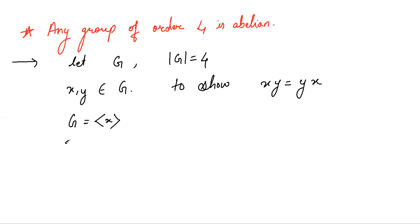Now if there does not exist an element of order 4 in G, then every element which is non-identity will have order 2.